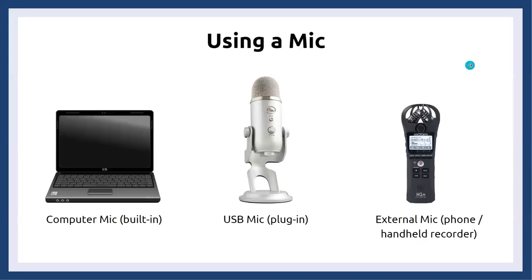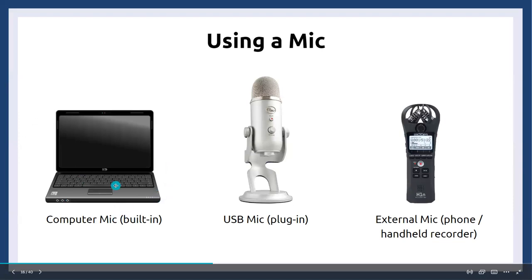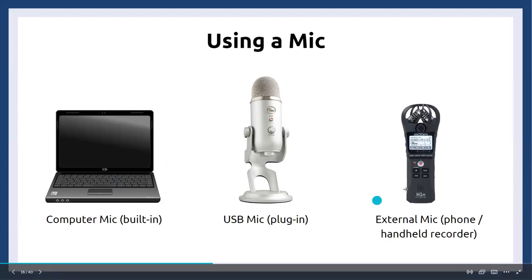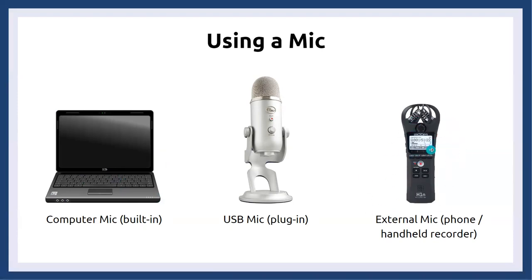We're going to get into the recording portion. Before we record, we need to choose the right equipment, and the first piece we need is the microphone. There are three types of mics we can use: the built-in computer mic, the USB mic plugged into the computer — which I showed you in our audio kit — or an external mic such as the handheld recorder or our phone. A lot of people will record on their phone and email the files to themselves to work on later.